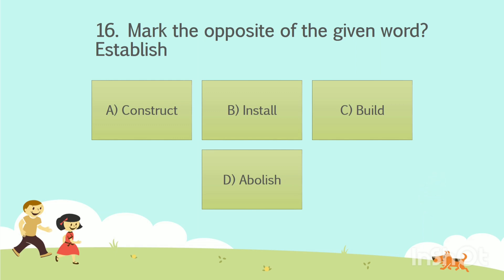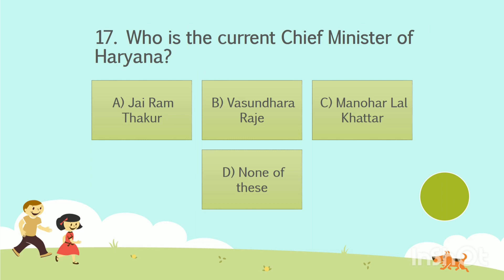The answer is Option D: Abolish. Question number 17. Who is the current Chief Minister of Haryana? Option A: Jayaram Thakur. Option B: Vasundara Raje. Option C: Manohar Lal Khattar. Option D: None of these. Your time starts now.